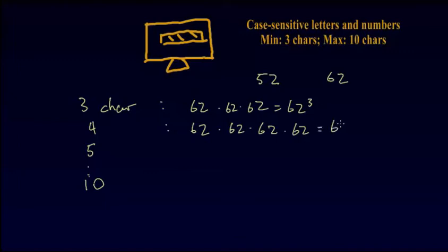For five characters, there are a total of 62 to the power of five number of ways of making this password, and so we do all this all the way to 62 to the power of ten.